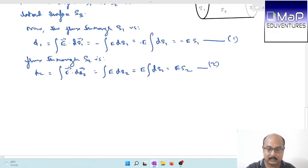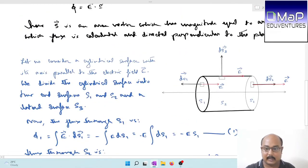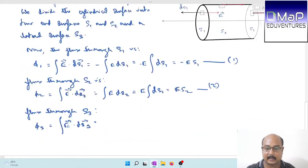Last, the flux through S3, the lateral surface. Phi 3 equals integration E dot dS3. The angle between electric field intensity and surface element dS3 is 90 degrees, so this equals zero.